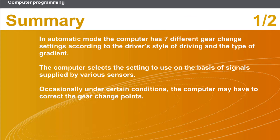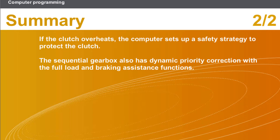In this section we covered the following points: in automatic mode the computer has seven different gear change settings according to the driver's style of driving and the type of gradient. The computer selects the setting to use on the basis of signals supplied by various sensors. Occasionally, under certain conditions, the computer may have to correct the gear change points. If the clutch overheats, the computer sets up a safety strategy to protect the clutch. The sequential gearbox also has dynamic priority correction with the full load and braking assistance functions.